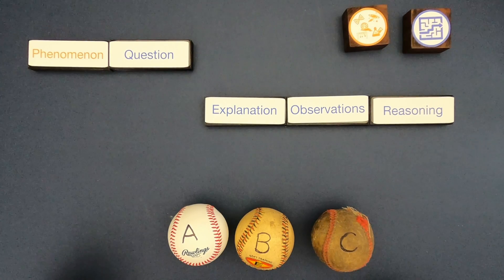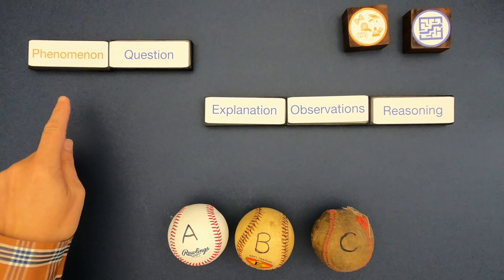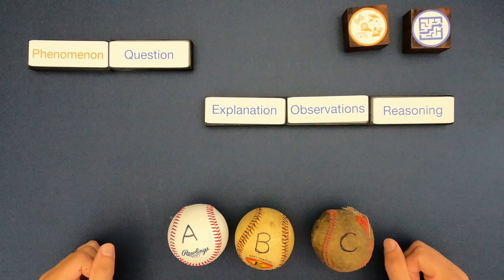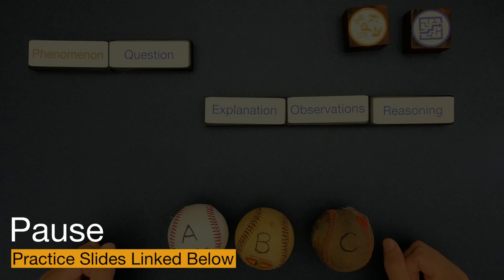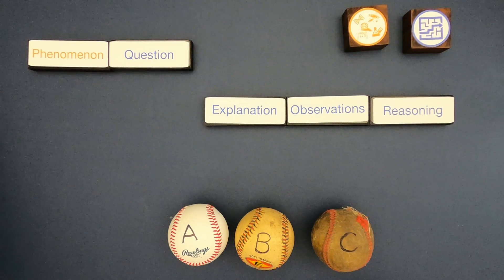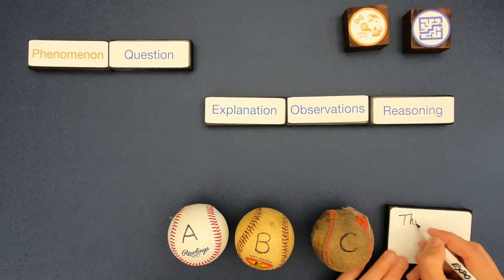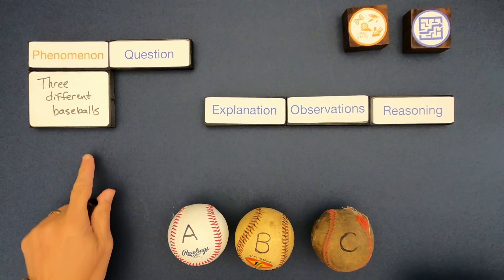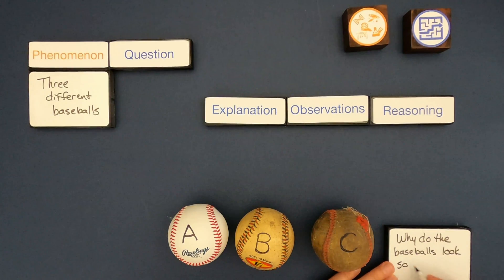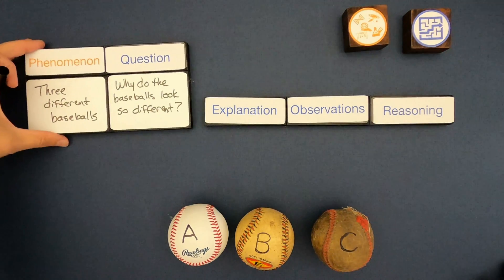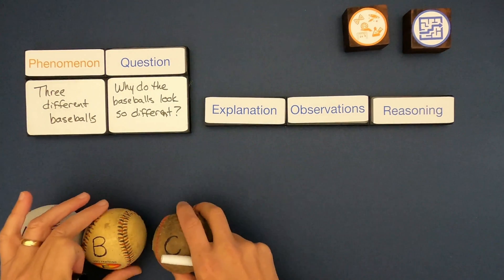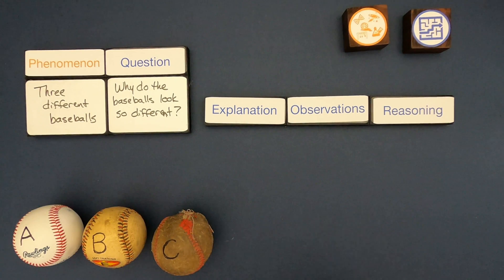For the next phenomena, we have these three baseballs that look clearly different. I'd encourage you to pause the video, write down the phenomena, the question, some observations, an explanation, and reasoning — then unpause and I'll show you my explanation. The phenomena is that we have three different baseballs that look clearly different, and the question we're going to try to answer is: why do the baseballs look so different? Remember, we don't jump right to the explanation — we start by writing down observations.